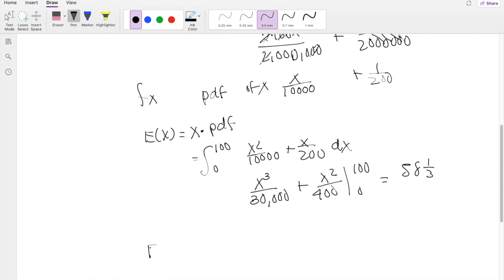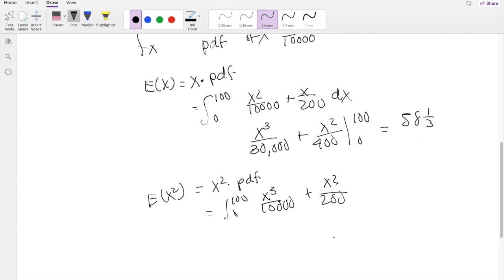All right, what's E(X squared)? We know that E(X squared) is just x squared times pdf. So this is equal to the integral from 0 to 100 of x cubed over 10,000 plus x squared over 200 dx.